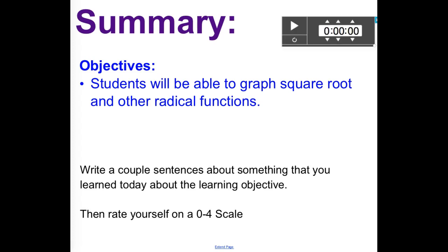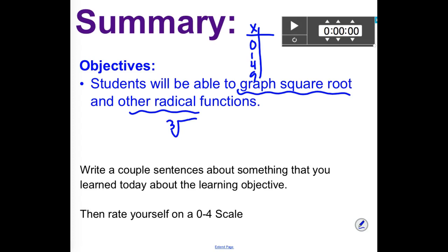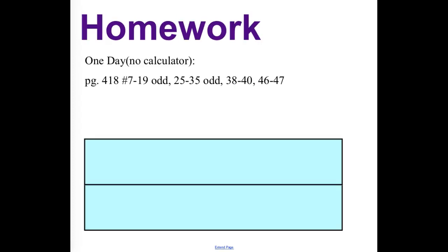Our objective today was to graph square root functions and other radical functions like cube roots. When graphing a square root function, choose x values 0, 1, 4, and 9. When graphing a cube root function, choose negative 8, negative 1, 0, 1, and 8. For homework, do page 418: problems 7 through 19 odd, 25 to 35 odd, 38 to 40, and 46 to 47. You will need graph paper, so make sure you grab a sheet.